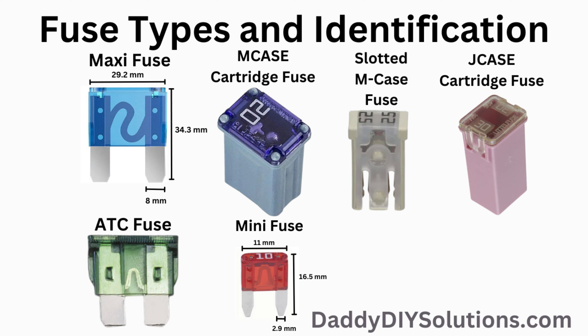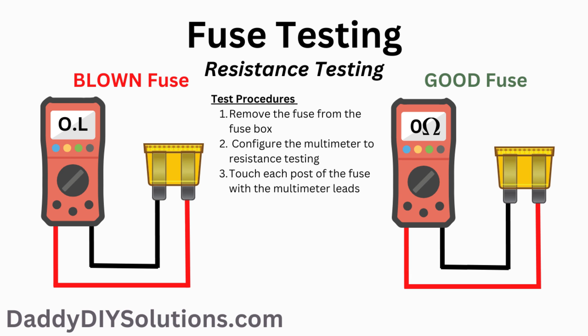Next, we'll show you how to use a multimeter to test the fuse. This is how you perform a resistance test using a digital multimeter. First, set your multimeter to resistance mode.